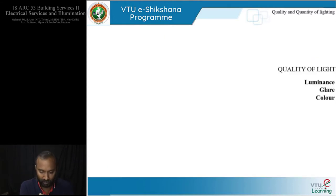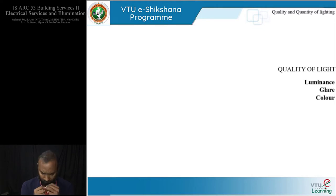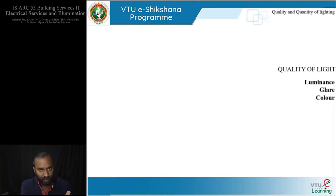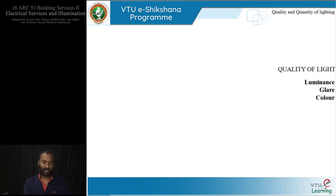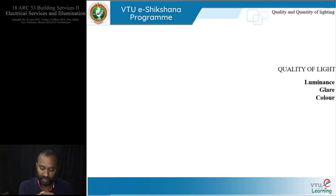There are three basic aspects of quality of light: luminance, glare, and color. Luminance, also called photometric brightness, is the light that we actually see illuminating a surface — not what is measured, but the light reflecting back to our eyes. It is the intensity of light emitted from a surface per unit area in a given direction.